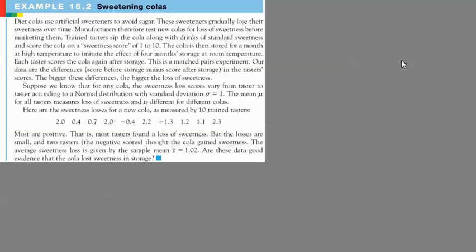So this is what's called a matched pairs experiment, and it's called a matched pairs experiment because we're measuring the same exact item. Again, this can of soda was tasted before storage, the same can of soda is tasted after storage. So it's not that we've manufactured one set and taste it along with a different set that had been stored.